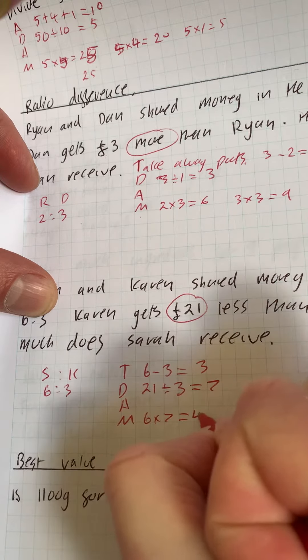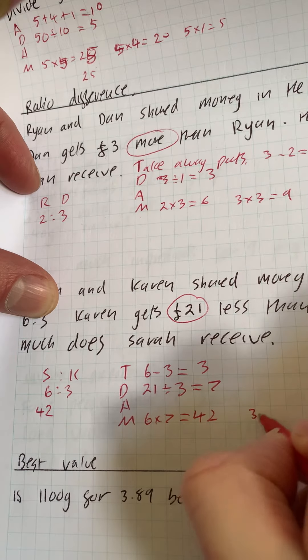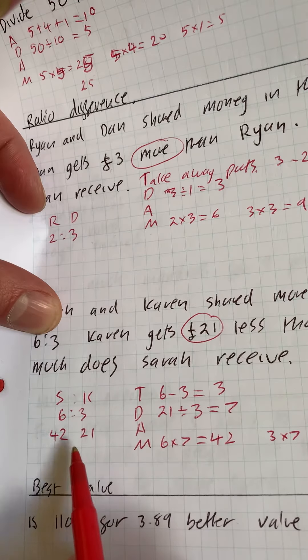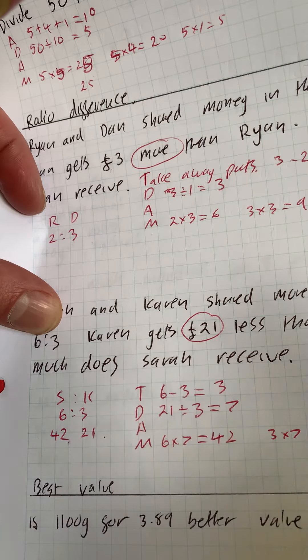So we've got six sevens, which is 42. So that's Sarah's and Karen's is going to be three times seven, which is 21. And we noticed from 21 to 42, the difference is 21, which is in our question. So we know we've got it right.